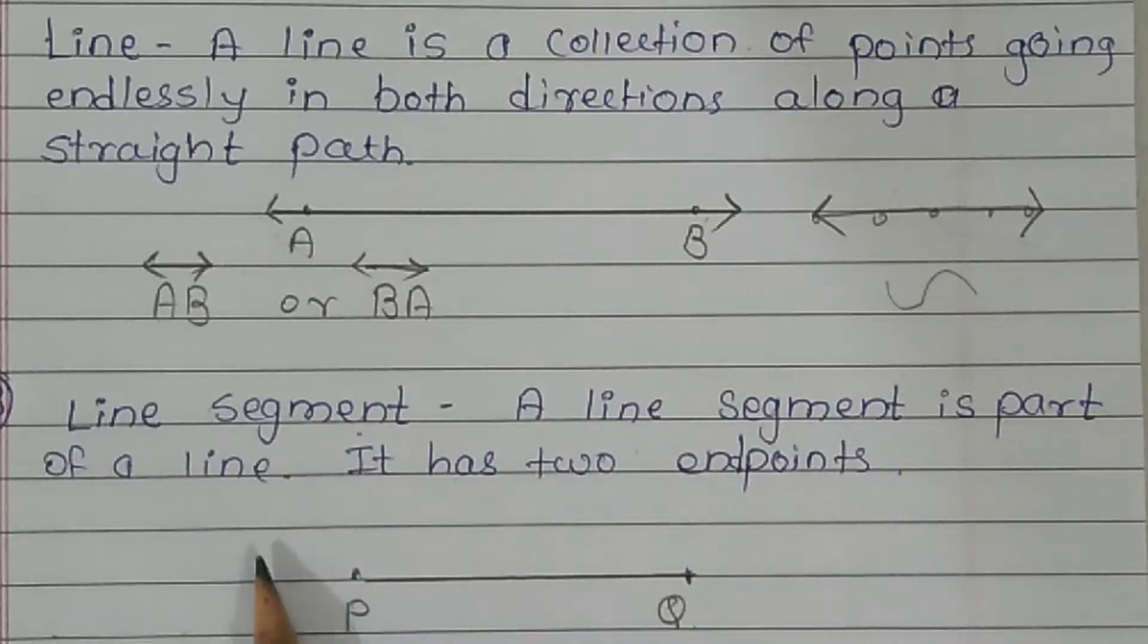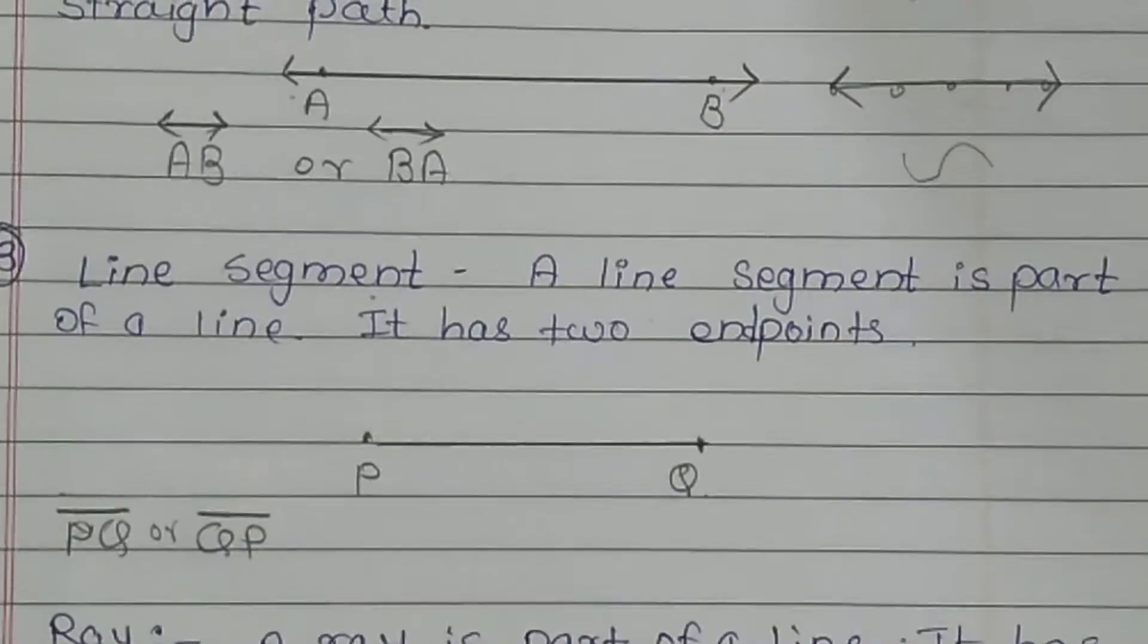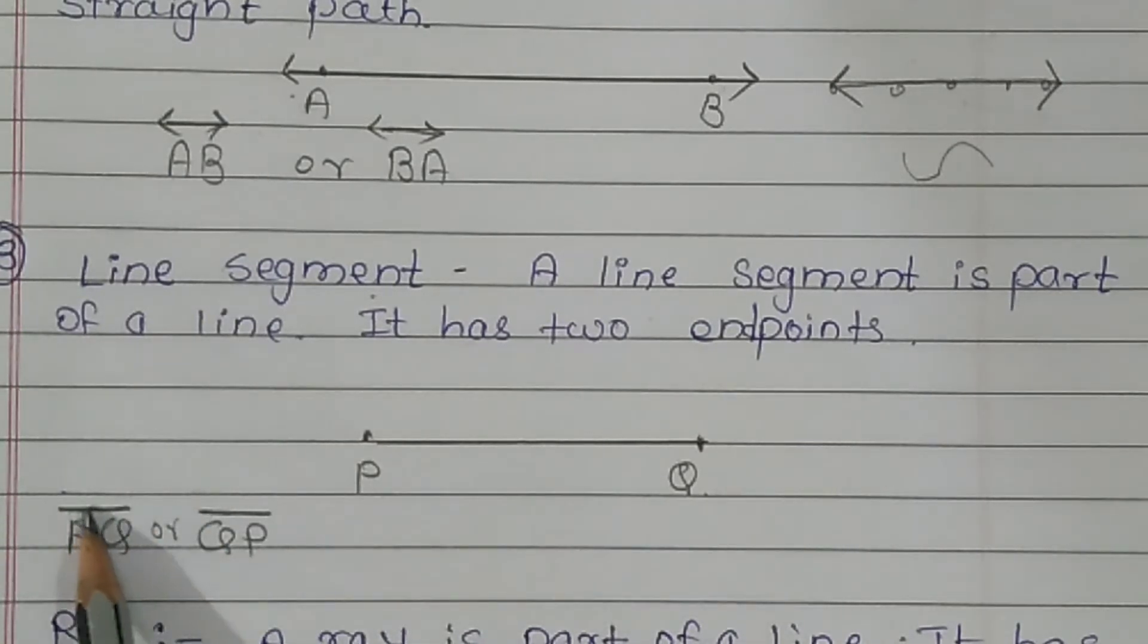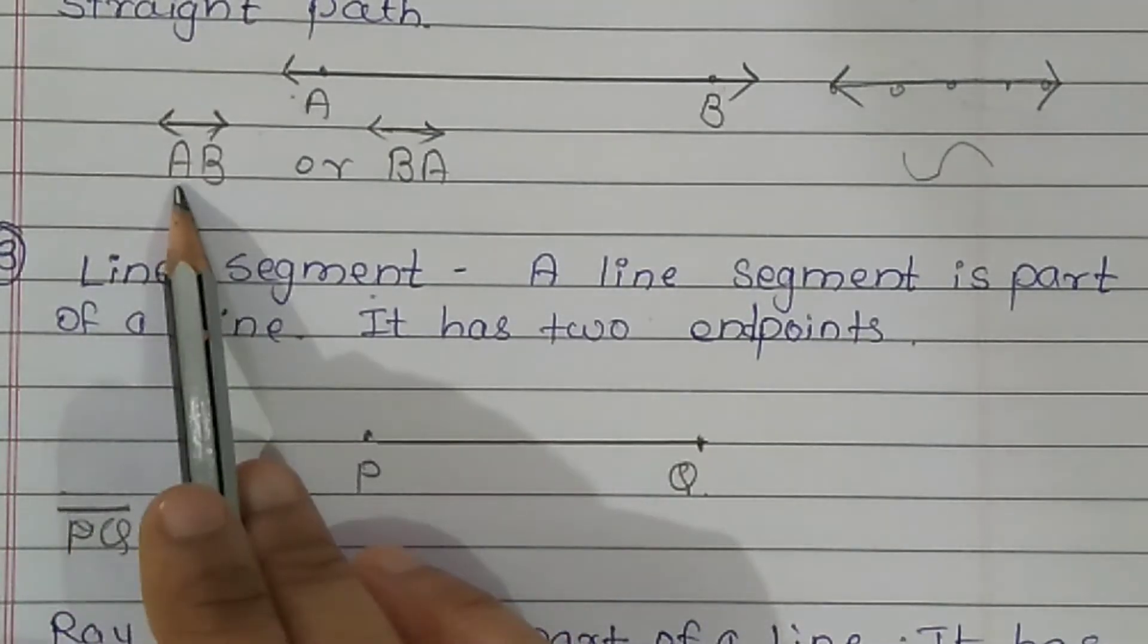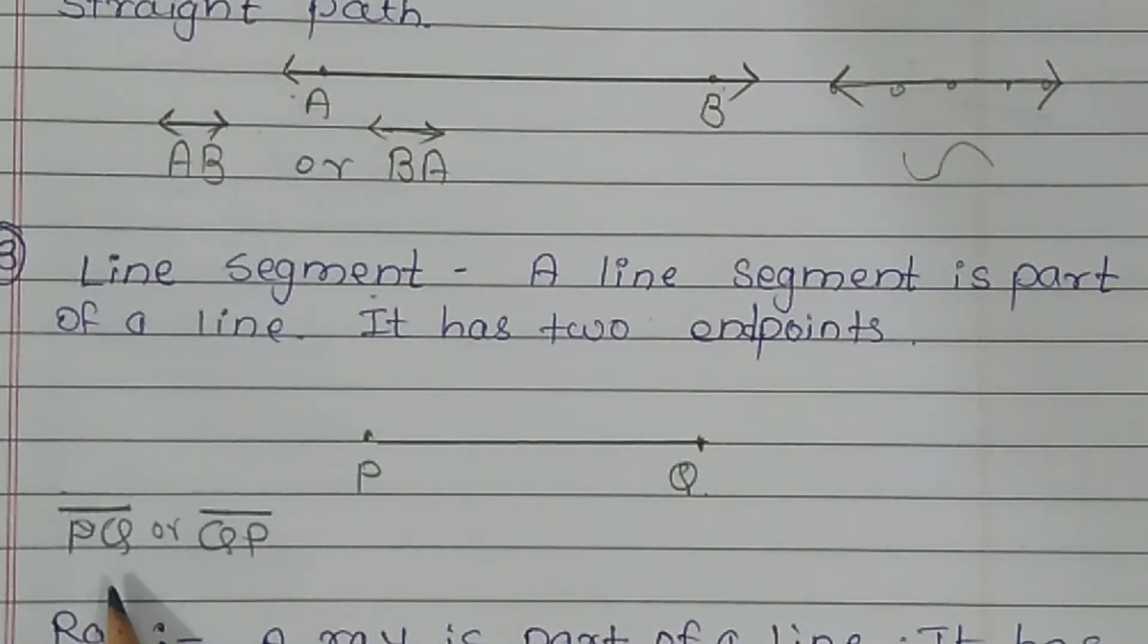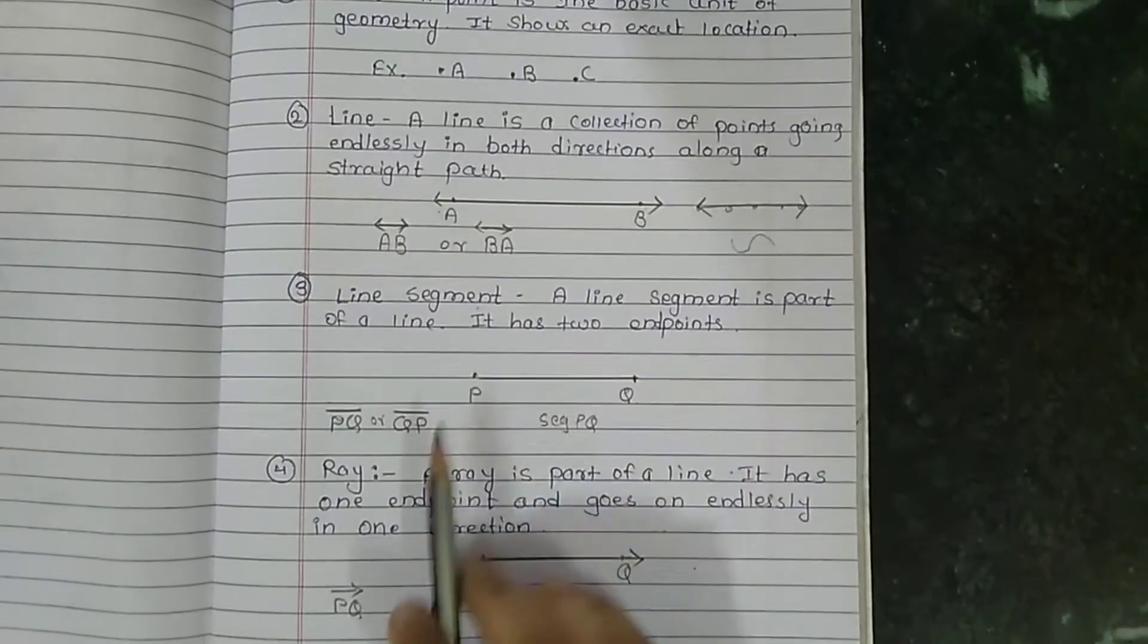Line segment. A line segment is part of a line. It has two end points. This is the line segment and it has two end points. And how to write? This is PQ, line segment PQ, segment PQ. So this is the line segment that I have drawn, segment PQ. And here I have drawn this line AB. This is segment PQ and you can also write it segment QP.